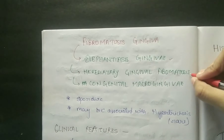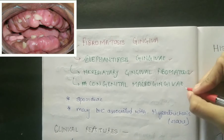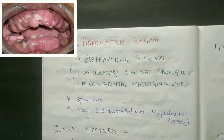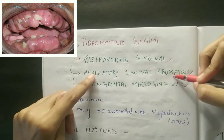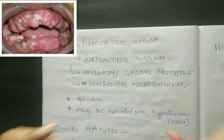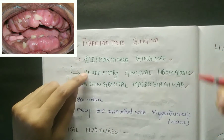Now coming to fibromatosis gingiva. Fibromatosis gingiva is also known as elephantiasis gingiva, hereditary gingiva fibromatosis, and congenital macrogingiva. All these names are justified, and these are the other names for fibromatosis gingiva.